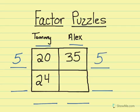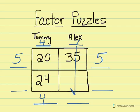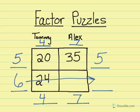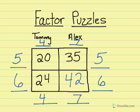I know 5 goes into 20 four times. And if I have a 4 at the top, I'm going to carry it down. I know 5 goes into 35 seven times. And if I have a 7 at the top, I'm going to carry it straight down. Over here, I can see that 4 goes into 24 six times. I'm going to bring my 6 straight across. Now I can figure out my missing factor: 7 times 6 is 42. So I know that when Tommy has saved $24, Alex will have $42.